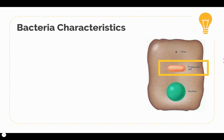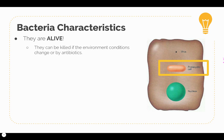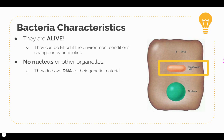Now we're going to talk about some characteristics of bacteria. The first thing to note is that bacteria cells are alive — they can be killed if environmental conditions change, such as changes in temperature or moisture levels, and they can also be killed by antibiotics. They are really simple cells compared to eukaryotic cells. Bacteria cells do not have a nucleus or other organelles, but they do have DNA as their genetic material and they do have ribosomes, so they are able to make their own proteins.